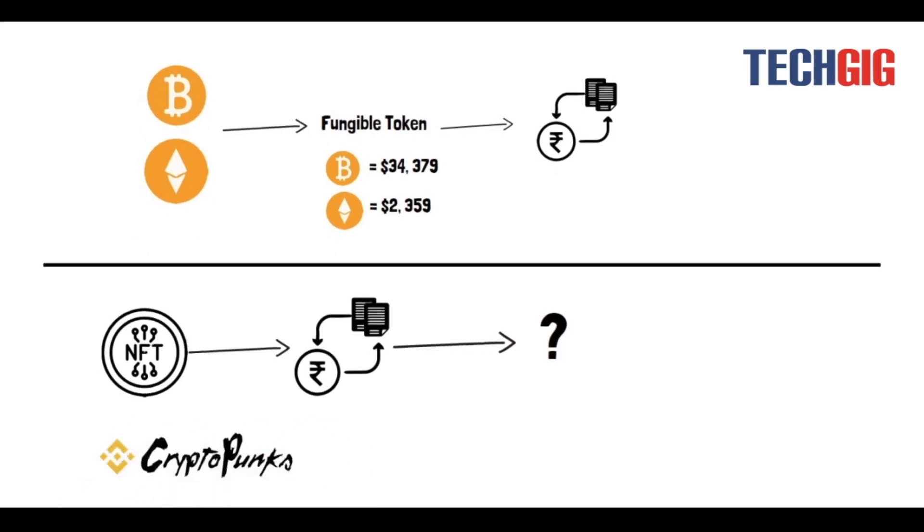CryptoPunks is a remarkable example of NFT. It enables you to buy, sell, or store 10,000 collectibles with proof of ownership being stored into Ethereum blockchain.